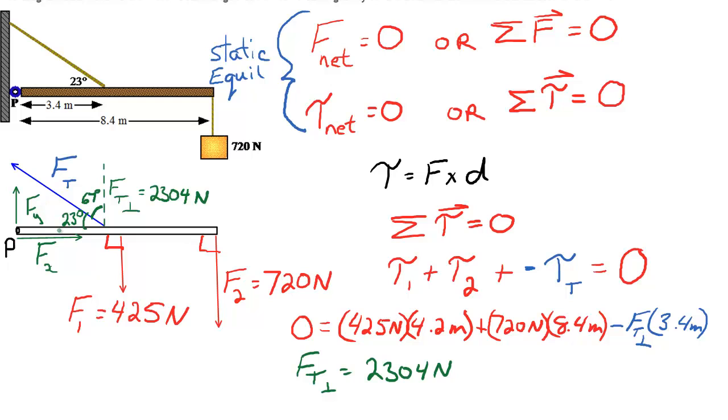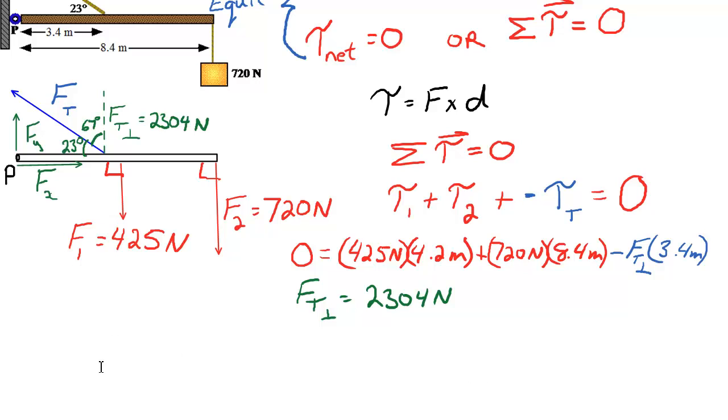And all we have to do now is find the hypotenuse of that triangle. So we have the adjacent side, and we're trying to find the hypotenuse, so I'm going to use cos. Let's slide things up so I have a little bit of room. So I'm going to say cos 67 is adjacent over hypotenuse, and it's the hypotenuse we're looking for. What is the actual value of FT? And when I solve for this, I should get an answer that's bigger than 2304, 5,896 Newtons, or 5,900 Newtons.